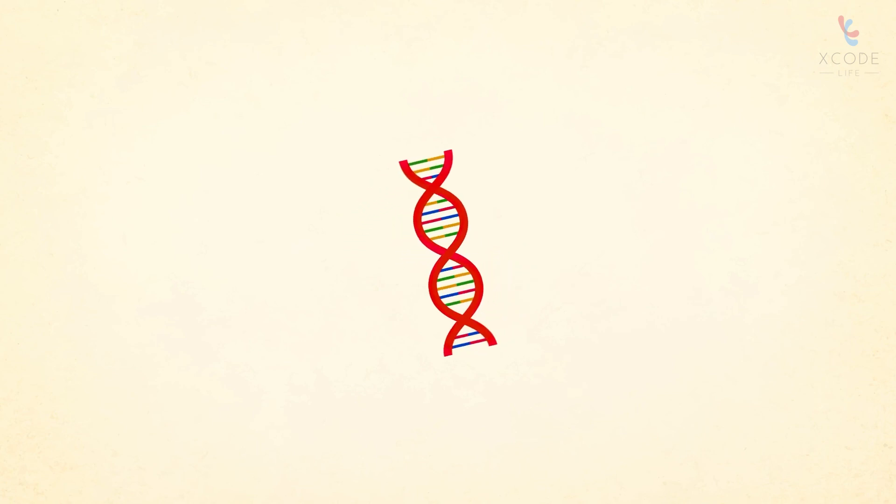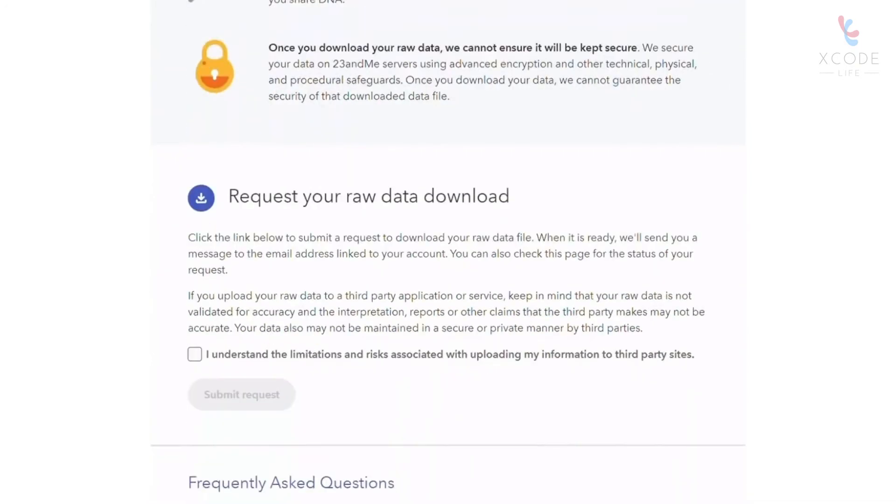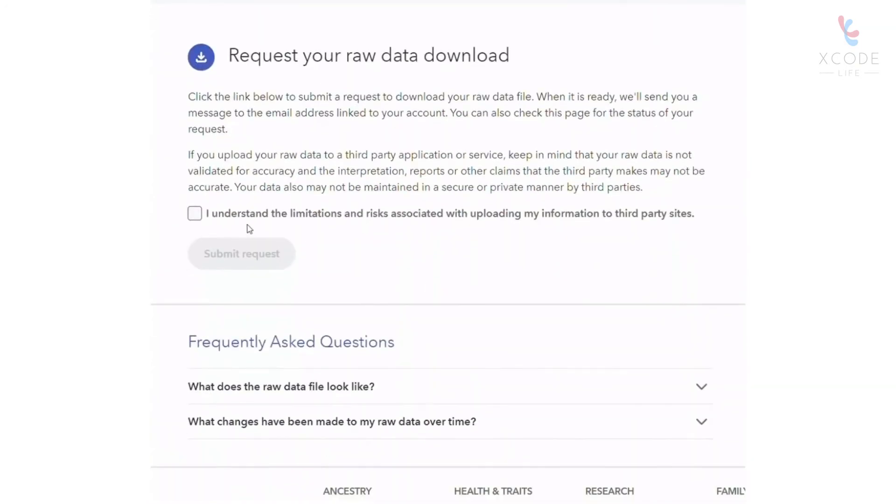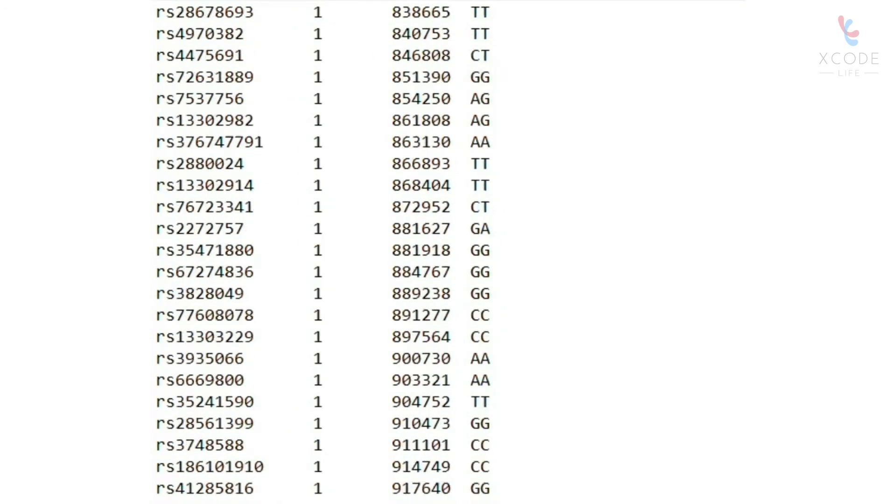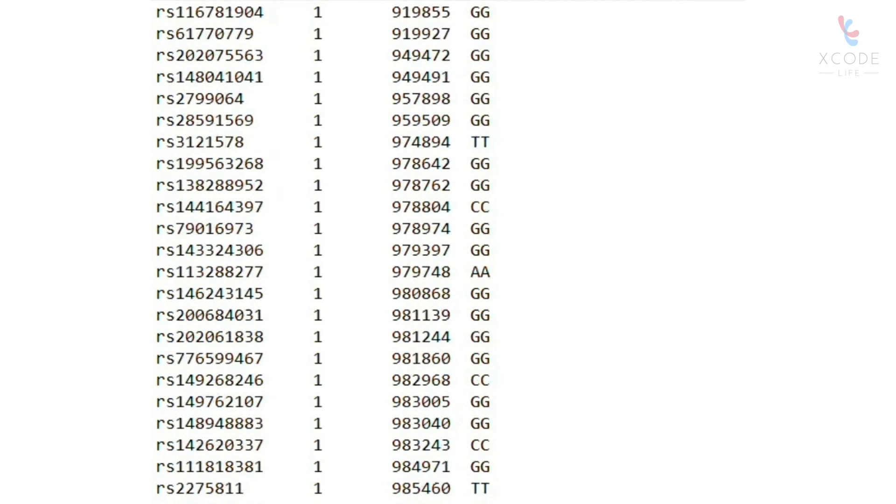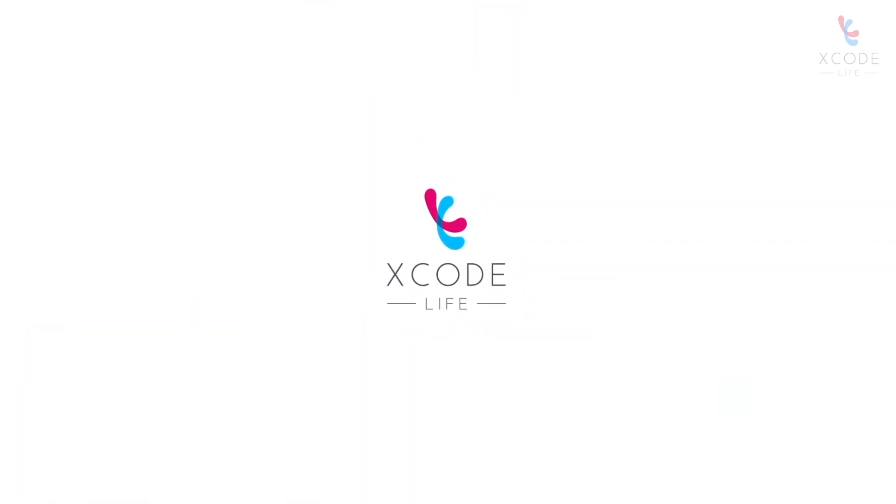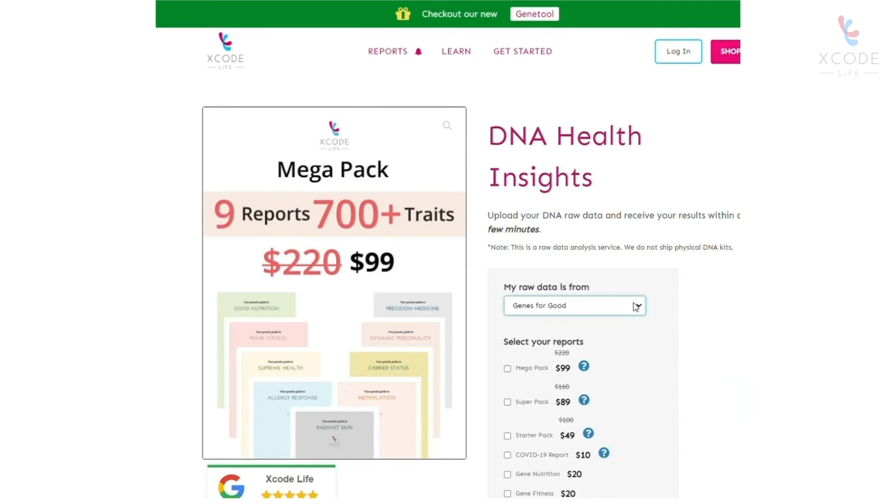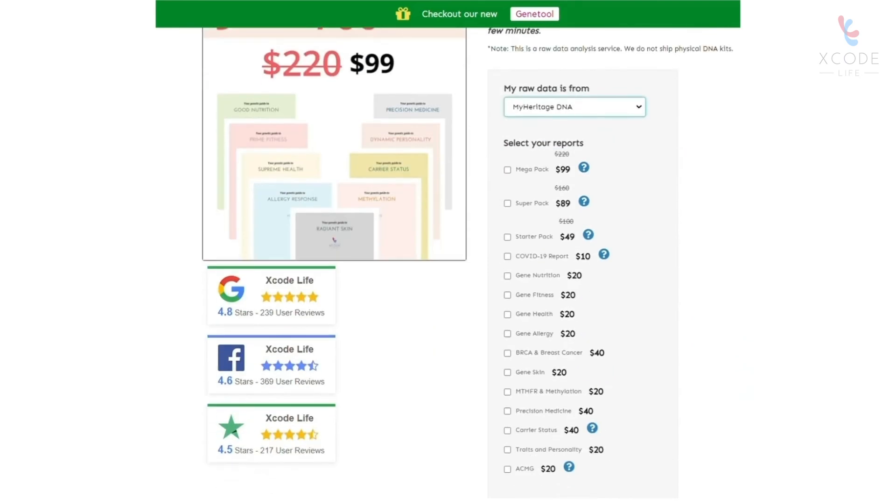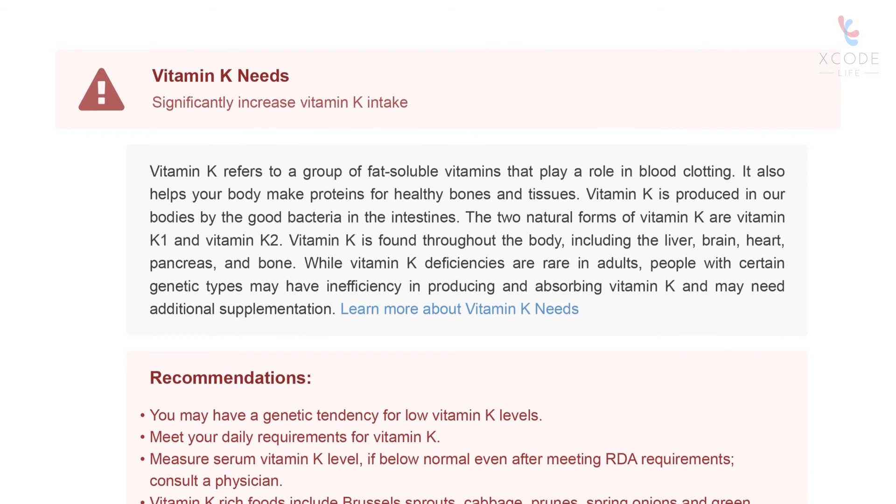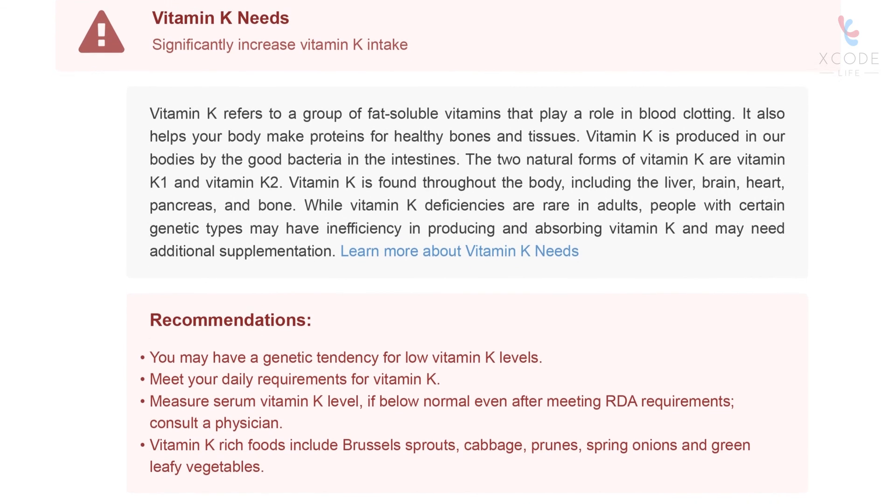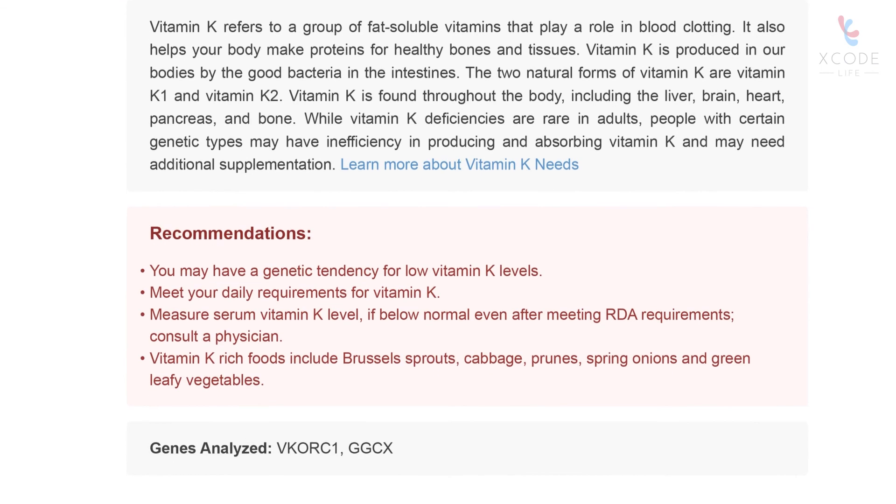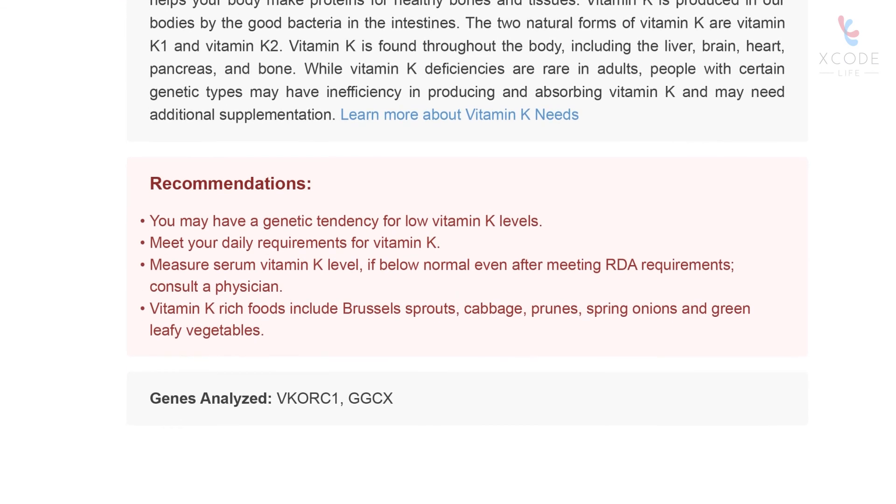Most genetic tests provide your DNA information in the form of a text file called the raw data. This data may look like a bunch of numbers and letters that may not be easy to decode. Worry not, Xcode Life can help you with this. All you have to do is upload this file and order the Gene Nutrition Report. We then analyze your raw data in detail to provide you with comprehensive nutrition analysis, including information on the VKORC1 gene.